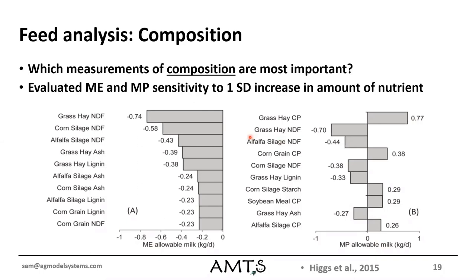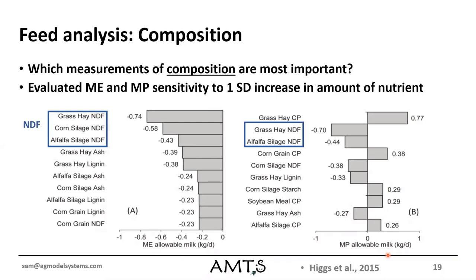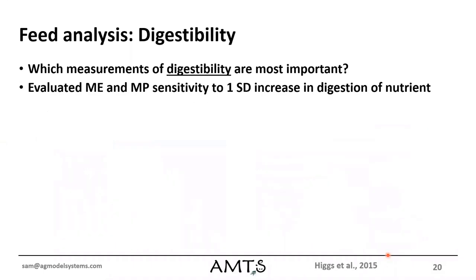If I were to pick only one measurement to take, I would pick NDF — just the content of NDF in my forages — because that accounts for the top three sources of variation in ME-level milk and two of the top three sources of variation in MP-level milk. My take-home: I have to test my forages at least for NDF, because those are the biggest sources of variation.